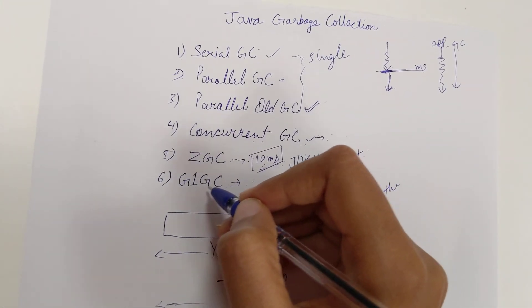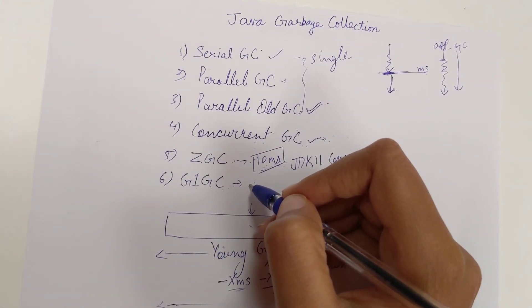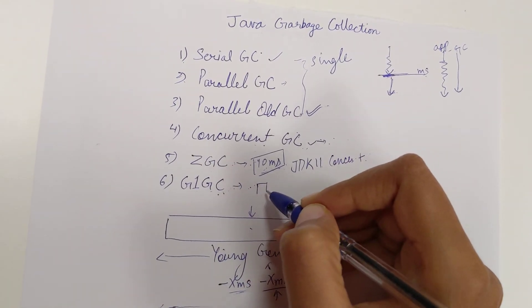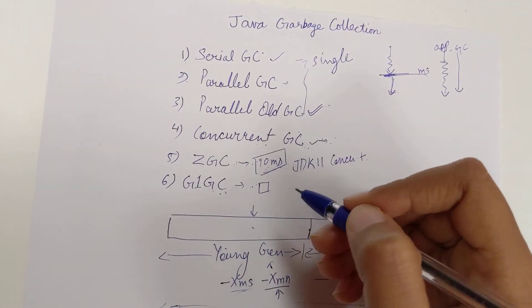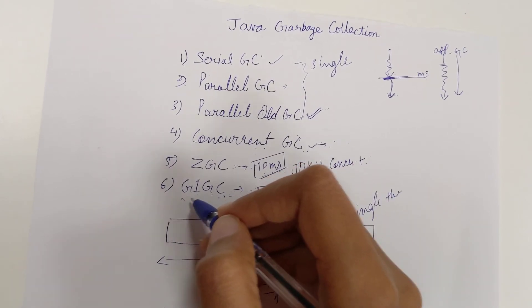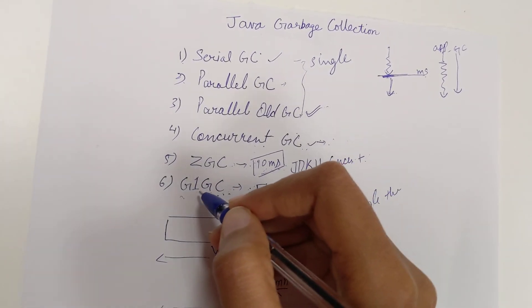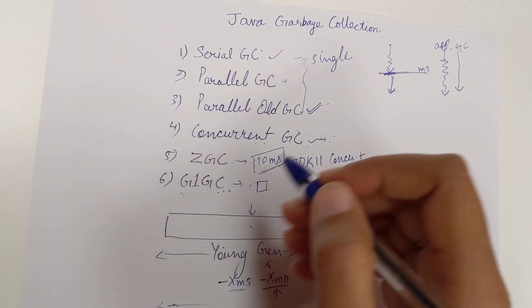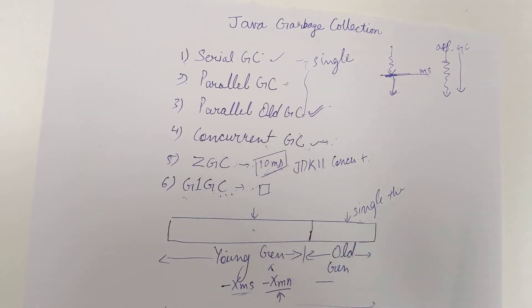G1GC is also a parallel kind of garbage collection, but in this one the regions are divided separately. That is a different concept. For now we can understand the basic thing—it clears the garbage first and runs in parallel. Thank you friends.